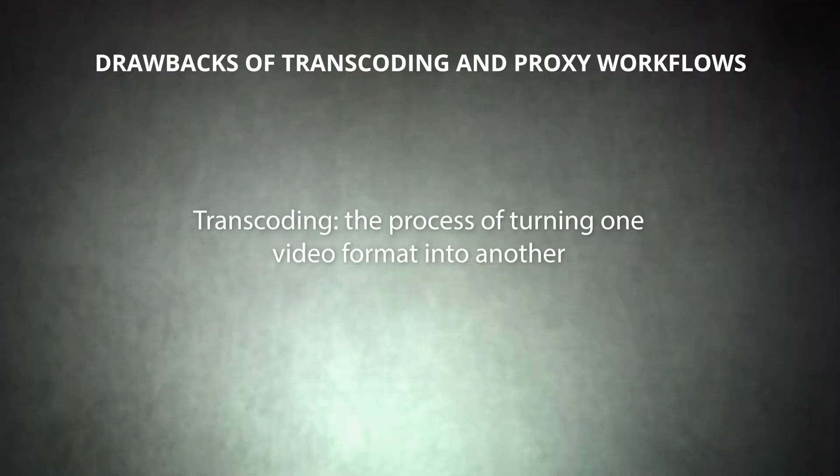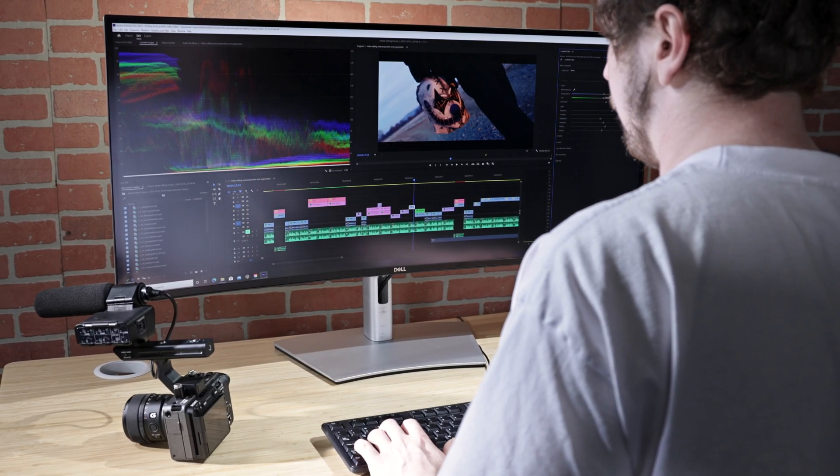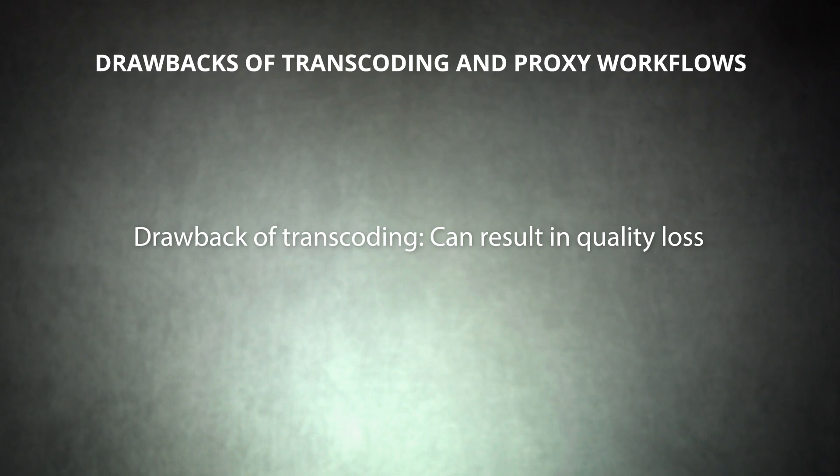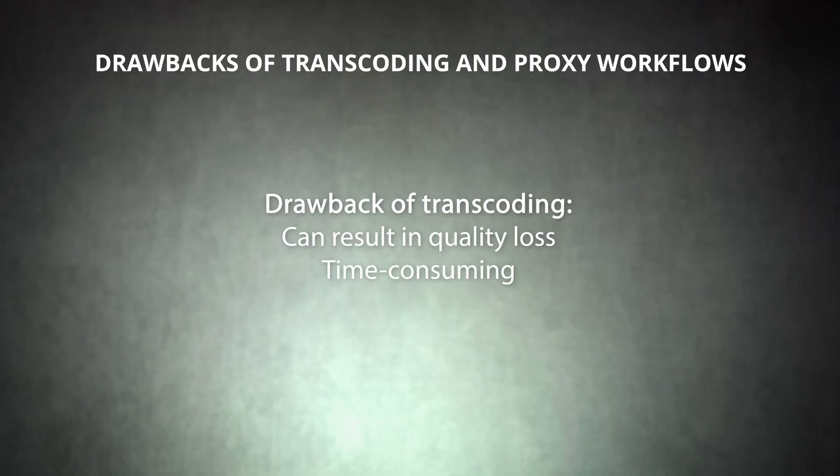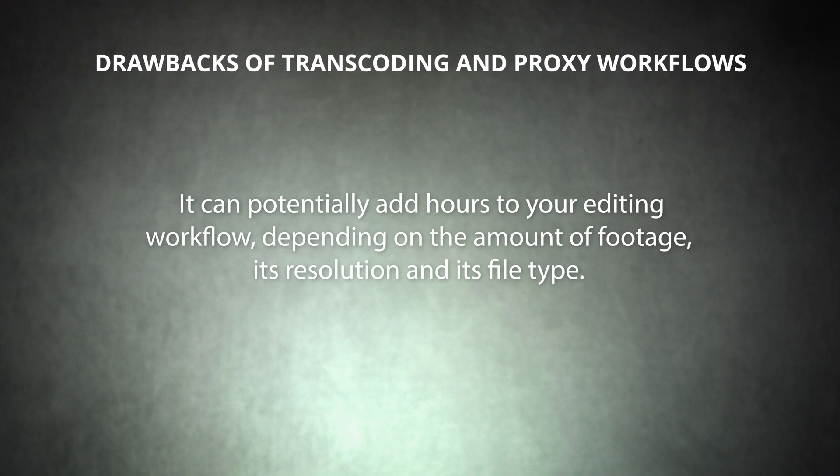Let's dig a bit deeper into transcoding and proxies. Transcoding is the process of changing the original file format into another video format type to better work with the computer or editing program you're using. You might transcode your footage if you need to reduce the file size or increase playability when the original file type requires a more powerful GPU or CPU. Once you transcode your footage, you'll edit using the transcoded files and then export your final video from those files. While transcoding is a good workaround if your footage doesn't agree with your editing system, it does have drawbacks. First, transcoding can result in quality loss — choosing the right codec can mitigate this, but in some situations quality loss is just inevitable. The other major drawback is that transcoding is a time-consuming process; it can potentially add hours to your editing workflow depending on the amount of footage, its resolution, and its file type.